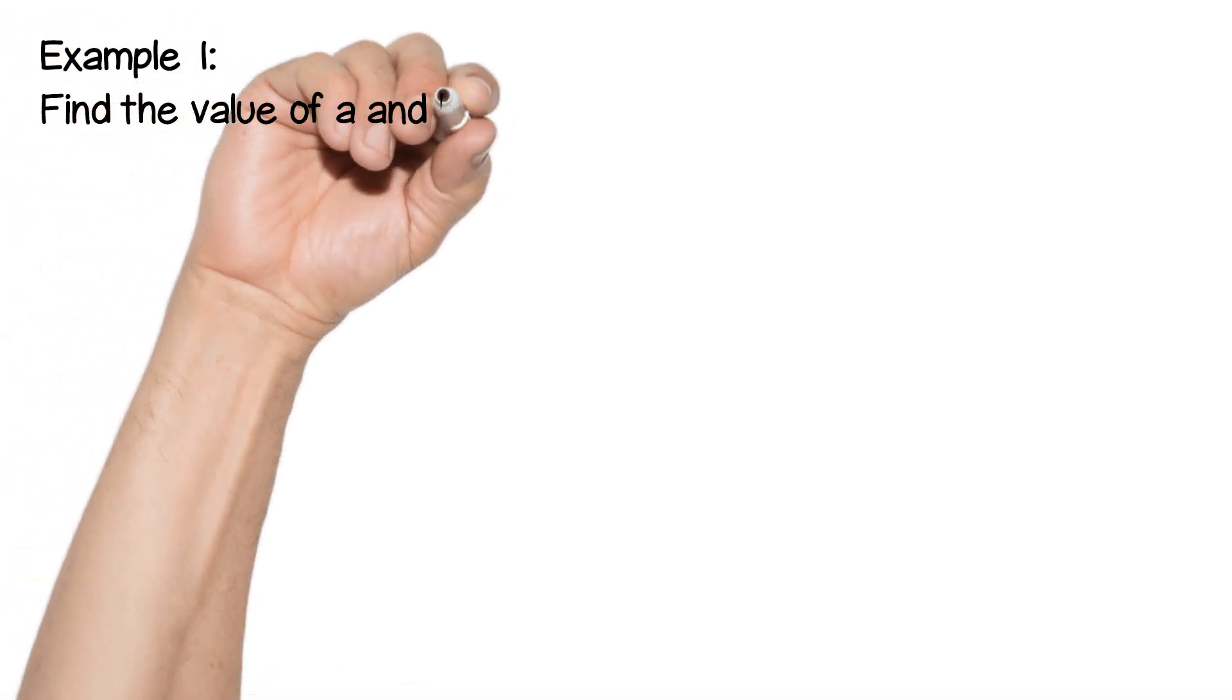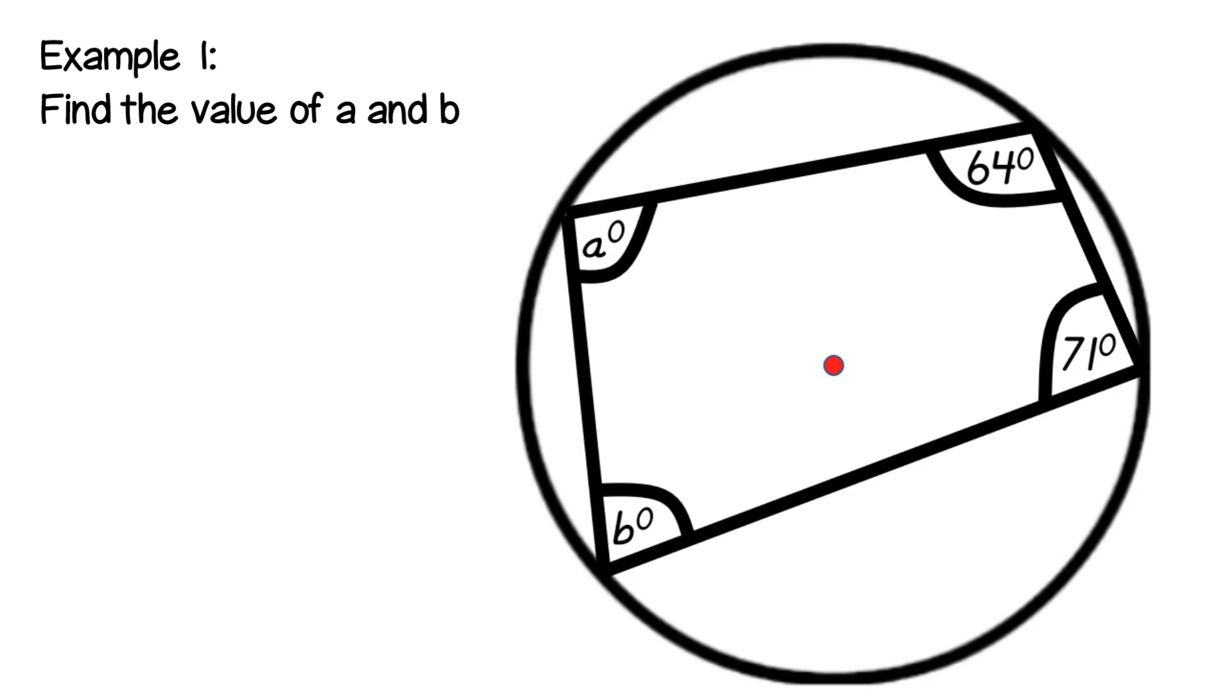So let's use that rule for example one. In example one it says find the value of a and b. First of all we have a four-sided shape within a circle. The second point: do all the corners touch the circumference? Yes they do. So we have a cyclic quadrilateral.